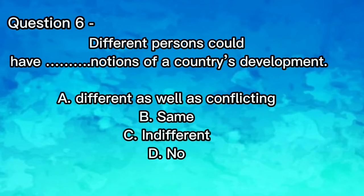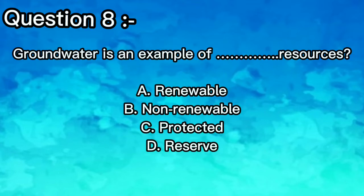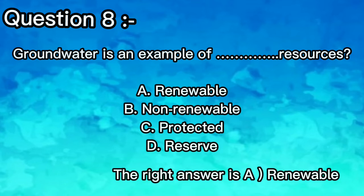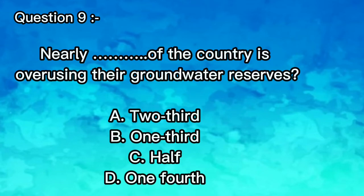Question 6: Different persons could have notions of a country's development that are A) different as well as conflicting, B) same, C) indifferential. The answer is A. Question 8: Groundwater is an example of what type of resource? A) Renewable, B) Non-renewable, C) Protected reserve. The right answer is A — renewable.